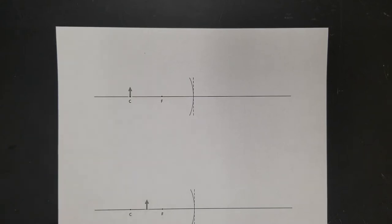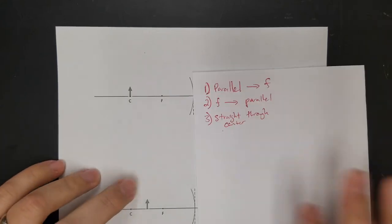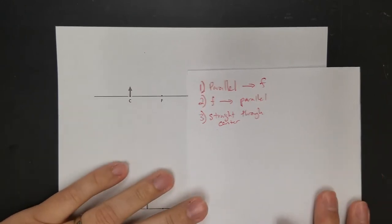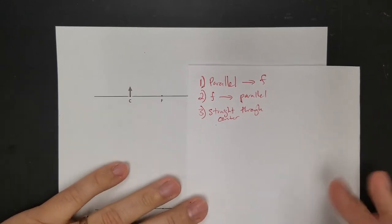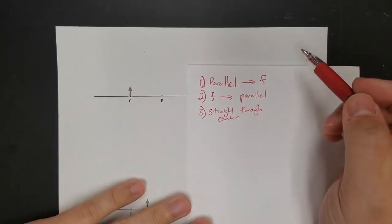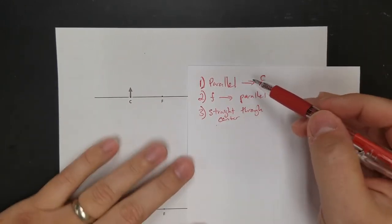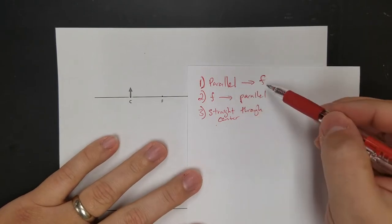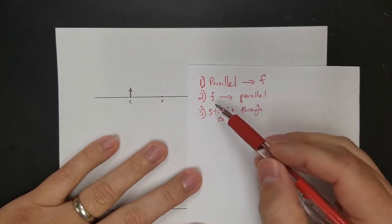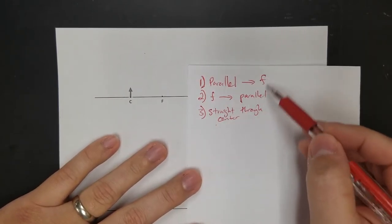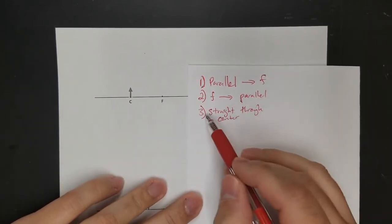Let's do some diagrams for mirrors. Mirrors are really similar to lenses. So our three principal rays for ray diagrams for mirrors: it's still parallel through the focal point, focal point out parallel — these two are just the opposite of each other.